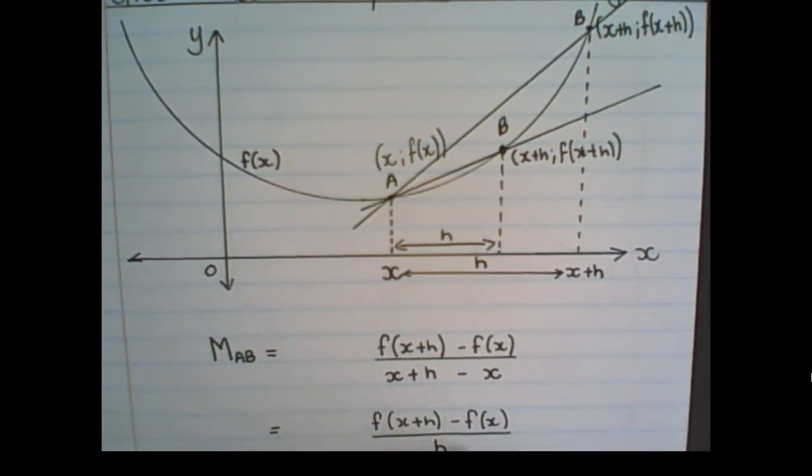So this then is a function for a gradient. Remember a function is a rule that we can apply. So this is a rule that we can apply to find the gradient between two points at any two points.